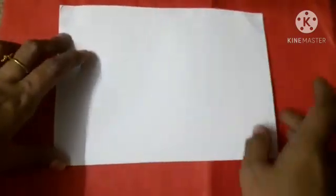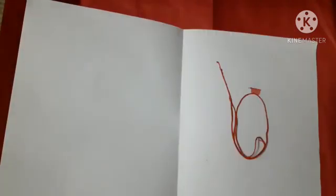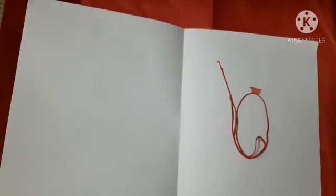Activity 2. Now children, take one more paper and fold it half. Now unfold the paper and we have to put a thread dipped in color on this paper. See, I have put a thread dipped in color on its one side.